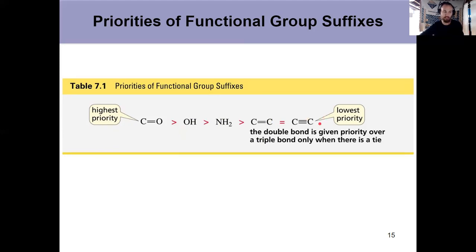Which are considered to be the same priority, unless, as we saw in rule four, you have both of them in the same molecule and there's a tie, in which case you give it to the alkene, which is why there's an equal. Well, it would only be greater than if there's a tie.